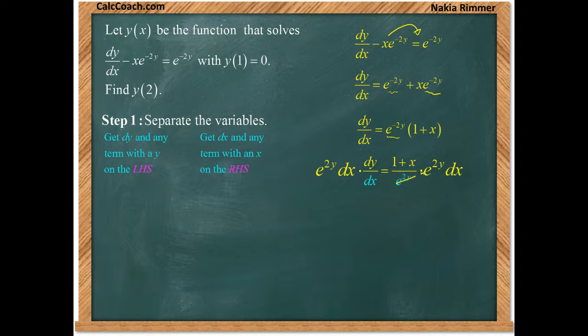E to the 2y will no longer be on the right. Dx will no longer be on the left. And we have it separated. E to the 2y dy is equal to 1 plus x quantity times dx.